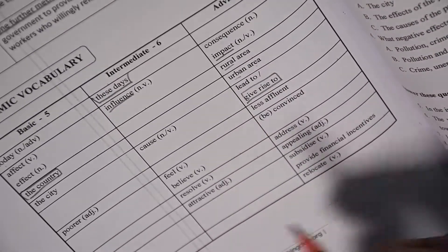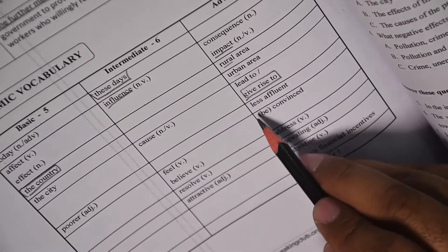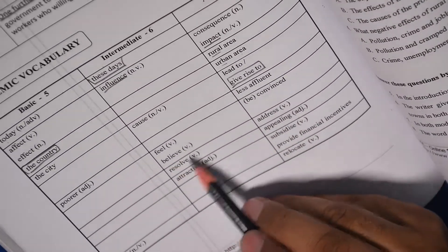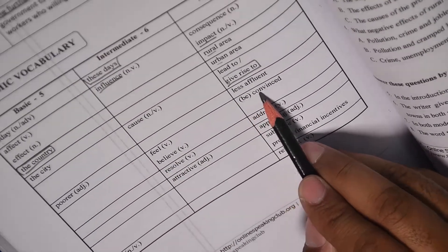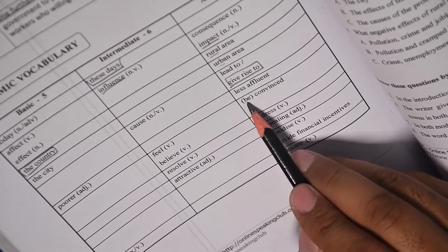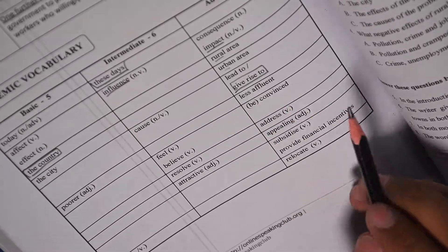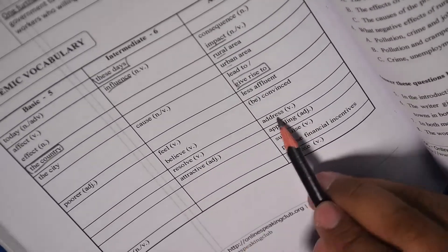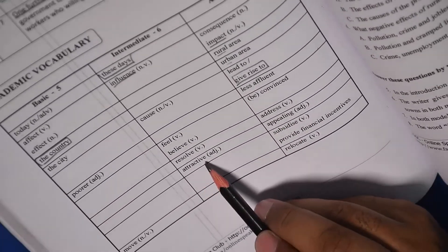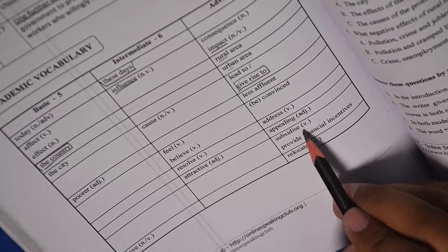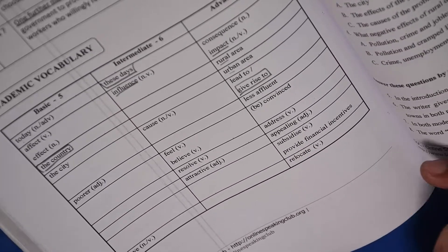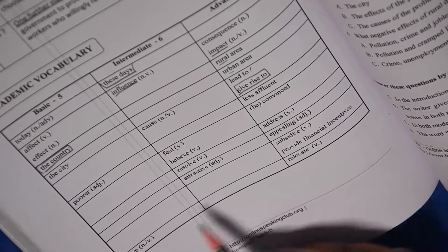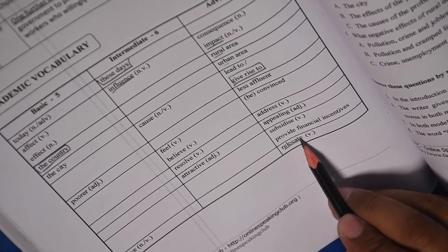Cause, lead to or give rise to. Give rise to means it causes. For poorer you can write less affluent. Affluent means rich. For feel or believe you can write convinced, I am convinced. Be means is, was were in past. Resolve, address the issue, resolve the issue, address the issue. Attractive, appealing. Subsidized means to give some sort of facilities, provide financial incentives. And for move, relocate is the best word.